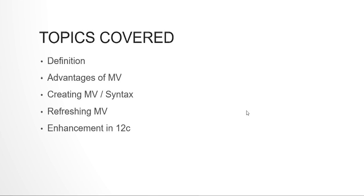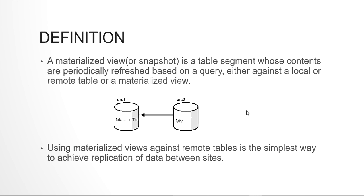Coming to materialized view, the definition of materialized view — or snapshot as they were known previously — is a stable segment whose contents are periodically refreshed based on a query. It is refreshed either against a local or a remote table. A materialized view will actually store the data from a parent table or master table. Whenever that parent table changes, we can refresh the materialized view. In 99% of cases, materialized views are used when working with two different remote databases.